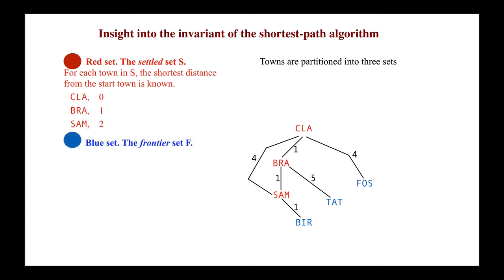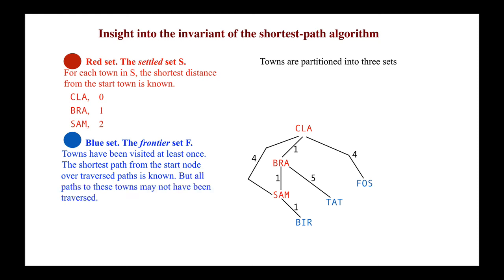Second, a blue set called the frontier set, F. These towns have been visited at least once. The shortest distance from the start town to each of those towns is known over roads that were traversed, but there might be shorter roads that haven't yet been traversed.